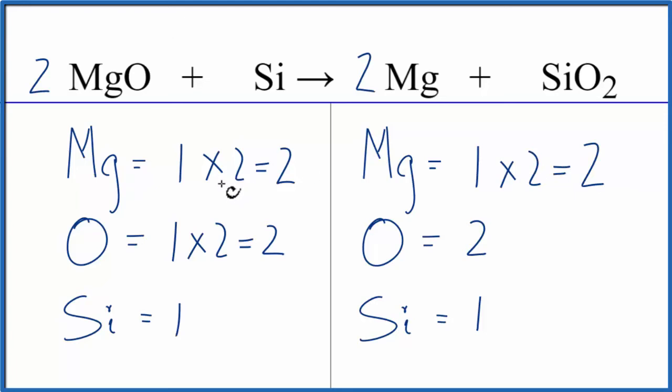And we're done. This equation is balanced. This is Dr. B with the balanced equation for MgO plus Si yields Mg plus SiO2. Thanks for watching.